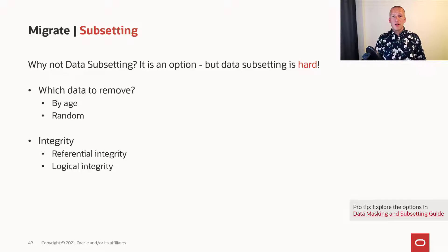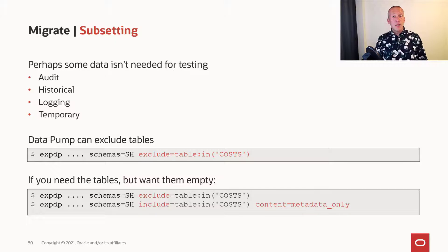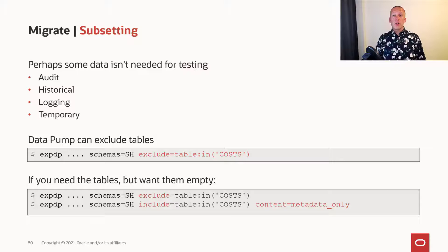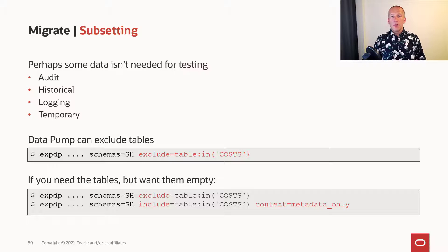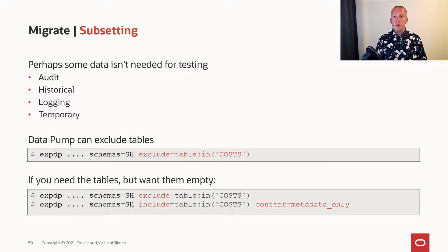We think it's hard. But subsetting can still be an option, because there might be some part of your application that you don't need. It could be, for instance, auditing or historical data, logging, or some sort of temporary data that is only needed for calculations. If you can exclude some of the table groups in your database, you can do that with Datapump by using the exclude option, and then specifying all the tables that you don't want.